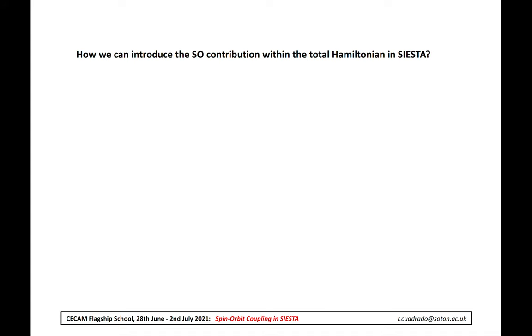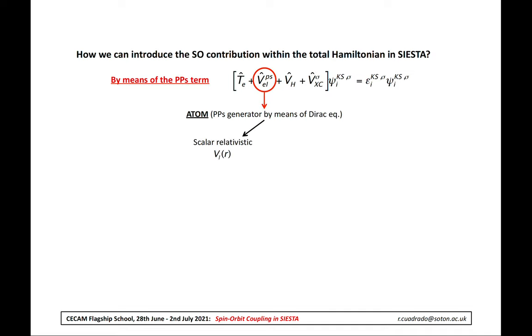Now the next step is to include in the total Hamiltonian of SIESTA the spin-orbit coupling. So, how can we do it? This is done by means of the pseudopotential formalism. In SIESTA, to construct the pseudopotential we use ATOM program, which can obtain the pseudopotential solving the Schrödinger equation or Dirac equation for an isolated atom. In doing this, we obtain radial functions for each L-quantum number, as we can see, for example, in this figure of the aluminum pseudopotentials. These two curves represent the radial functions for each L-quantum number.